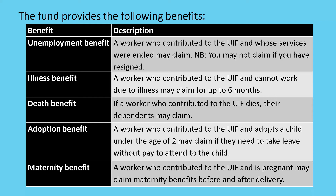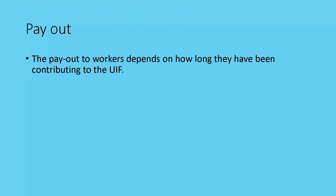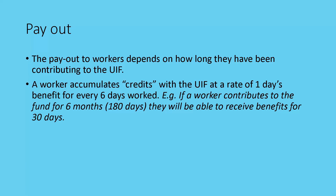Now let's look at the payouts. The payout depends on how long you've been contributing to the UIF — it accumulates credits. One day's benefit is earned for every six days worked. So if a person works 30 days they get five days' benefit. If a person contributes for six months, which is 180 days, they're able to claim 30 days of benefits.